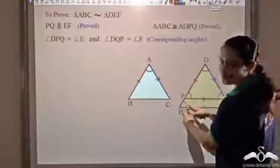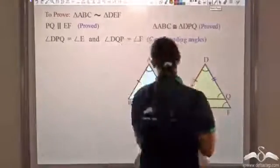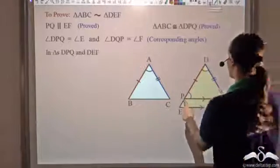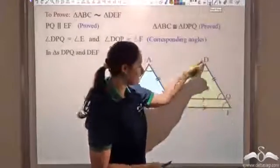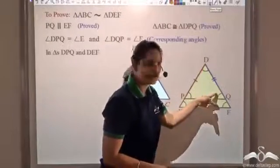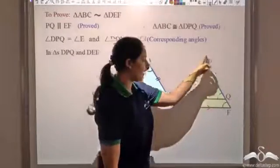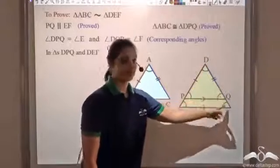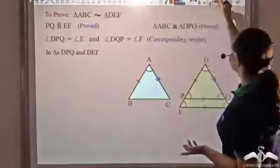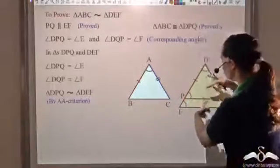Similarly, angle DQP equals angle F — corresponding angles again. So in triangles DPQ and DEF, I get two pairs of angles equal: angle DPQ equals angle E, and angle DQP equals angle F. Since two pairs of angles are equal, I can say the triangles are similar by the angle-angle criterion. So triangle DPQ is similar to triangle DEF.